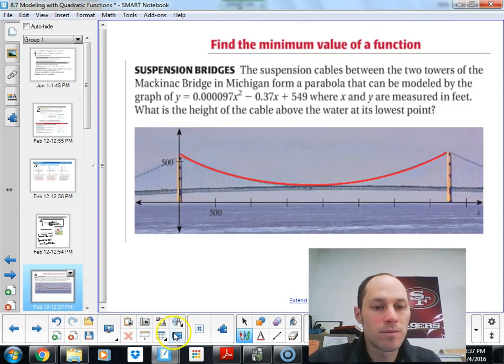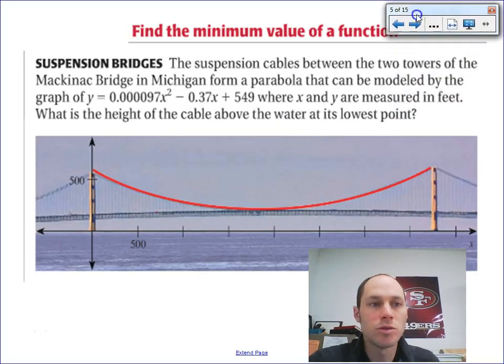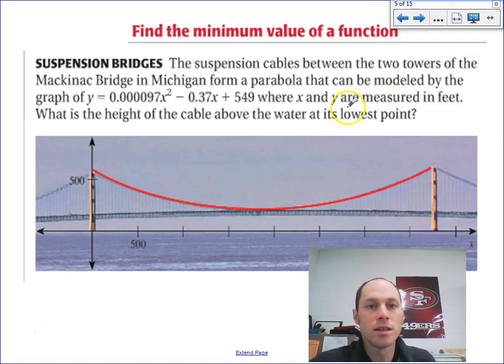Let's take a look at our next example. We've got a bridge, a suspension cable between two towers at the Mackinac Bridge in Michigan. Those form a parabola modeled by the graph y equals 0.000097x squared minus 0.37x plus 549. If we take that parabola and throw it on a graph, that's the equation that we get. x and y are measured in feet. We want to find the height of the cable above the water at its lowest point. The lowest point is going to be its vertex.